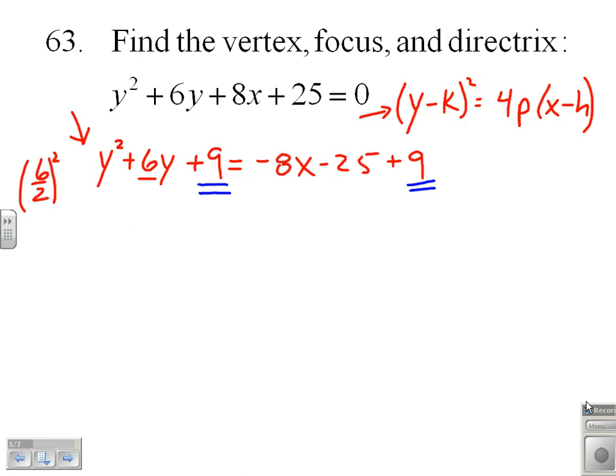At that point, I've got a perfect square on the left. I've got y plus 3 squared equals, on the right, negative 8x minus 16.